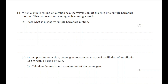The next question asks about a ship on a rough sea setting passengers into simple harmonic motion causing seasickness. 'What is meant by simple harmonic motion?' is essentially the same question as the conditions for SHM. Simple harmonic motion is an oscillation in which the acceleration of an object is proportional to the displacement from the equilibrium position, but opposite in direction. Remember to write it out fully in words.